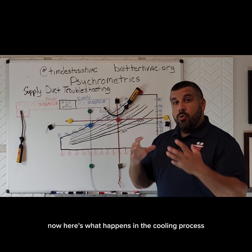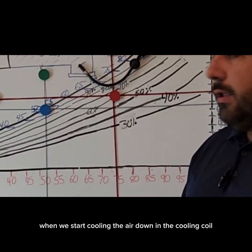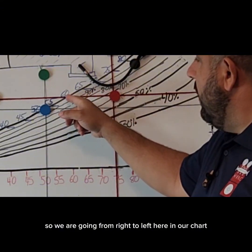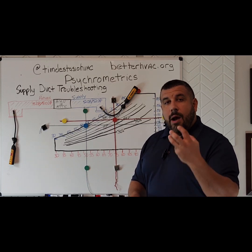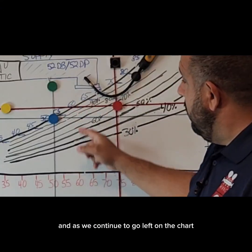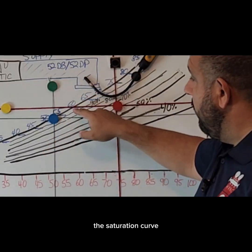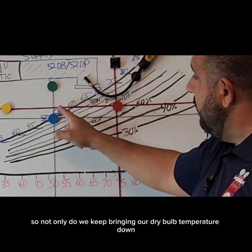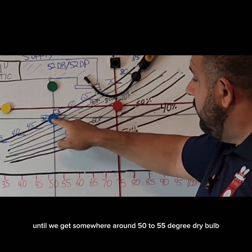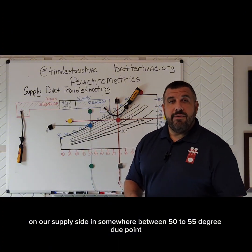Here's what happens in the cooling process. When we start cooling the air down in the cooling coil, we immediately start bringing the dry bulb temperature down, so we are going from right to left here in our chart. Now, once we get to our saturation curve, our air has been cooled down to saturation — it is at 100% relative humidity. And as we continue to go left on the chart, we have no choice but to slide down the saturation curve. So not only do we keep bringing our dry bulb temperature down, but we also start removing moisture, because now we're actually going lower in our chart until we get somewhere around 50 to 55 degree dry bulb on our supply side and somewhere between 50 to 55 degree dew point.